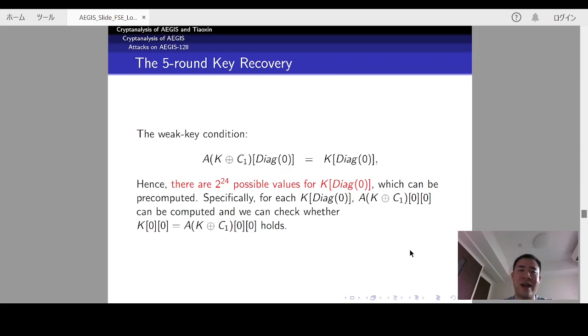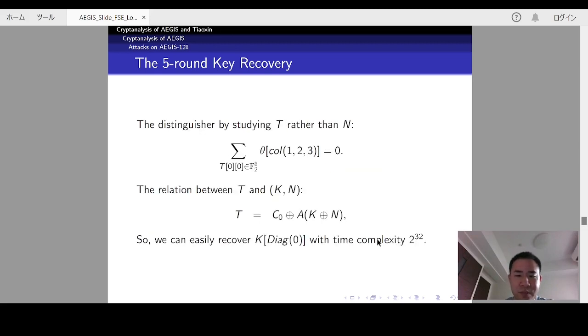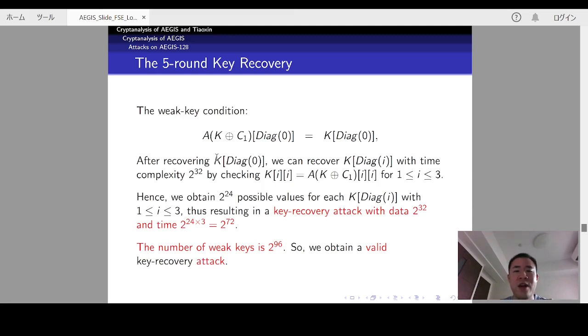So, based on the distinguisher, we can mount a key recovery attack. Specifically, according to the weak-key condition, we can pre-compute 2 to the 24 possible values for the first diagonal of K. Then, according to the distinguisher built on T and the relation between T and N, we can readily recover the first diagonal of K with time complexity 2 to the 32. After recovering the first diagonal of K, we can recover the remaining diagonals independently by checking the condition on Kii and by checking this condition.